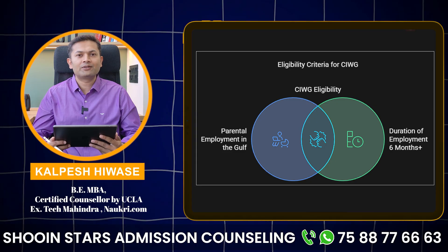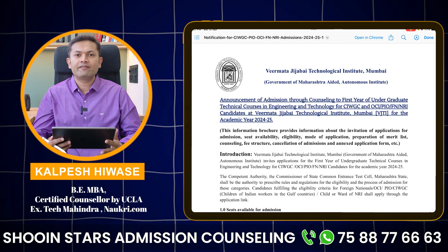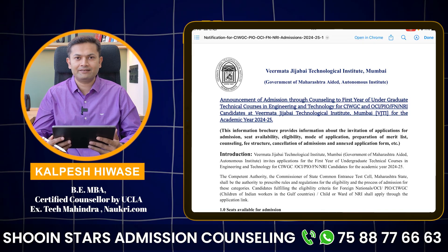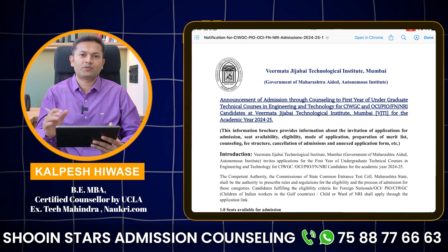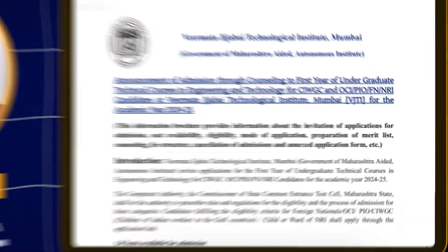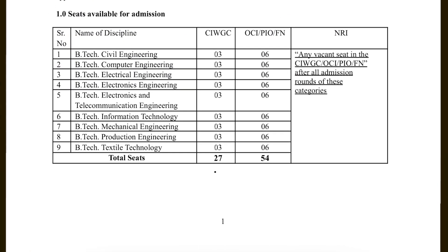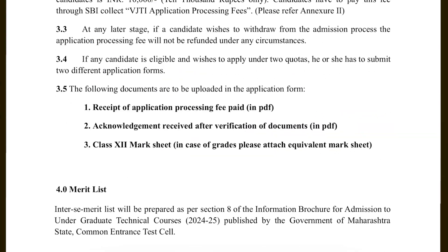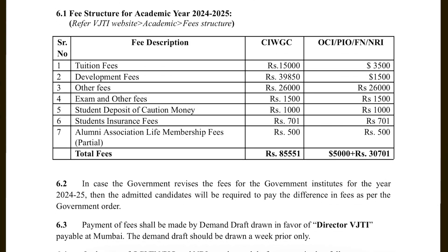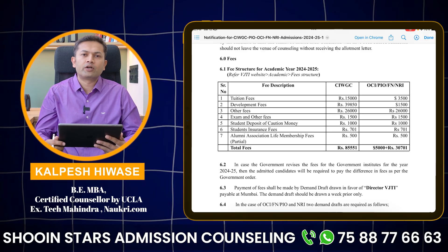Now let's go back to the VJTI notification. If you are getting calls from an agent telling you that they will give you a seat in VJTI for 15–20 lakhs, then it is absolutely baseless. You just need to follow the process and there is absolutely no need for any donation. This notification talks about the NRI or CIWG admission process — it tells about the number of vacant seats, the documents required, the fees, and many other things. You just have to apply and attend the rounds as per the notification.